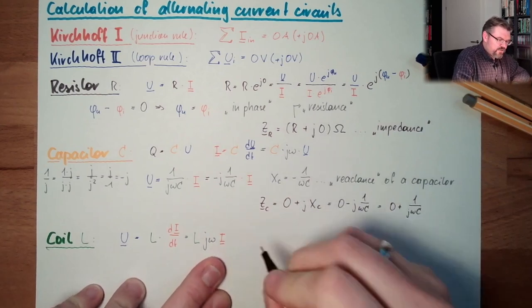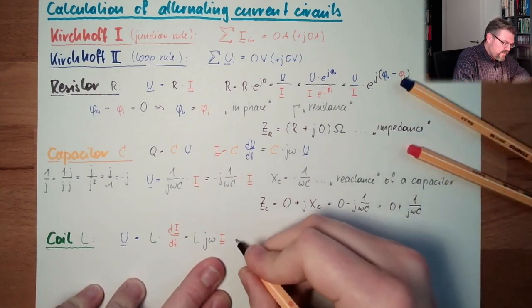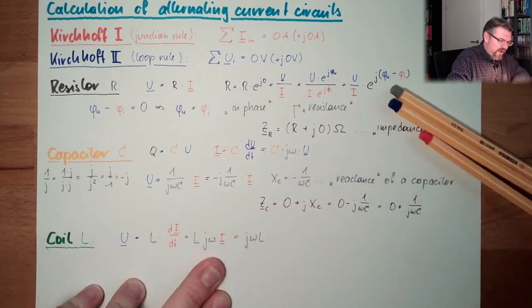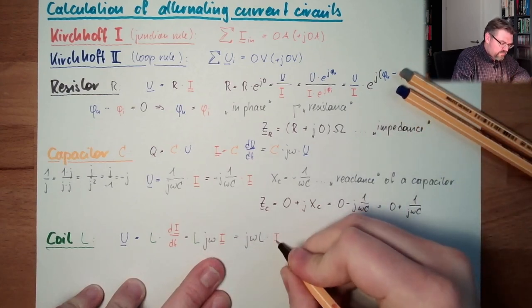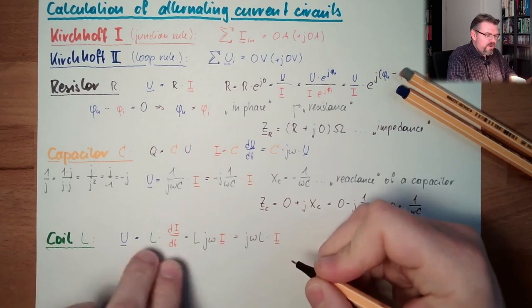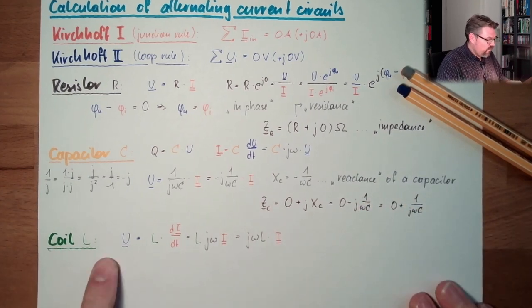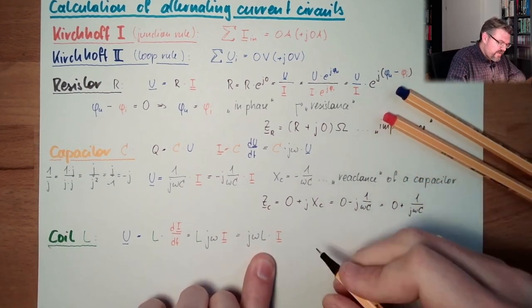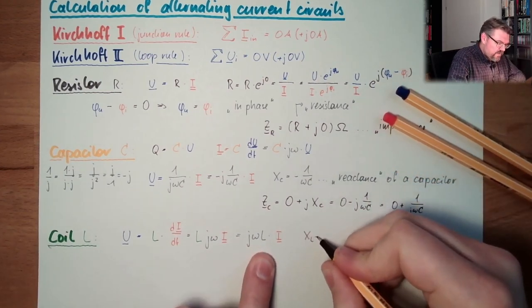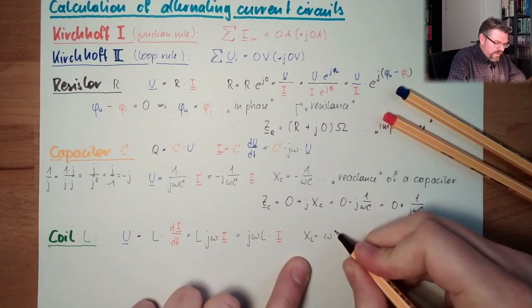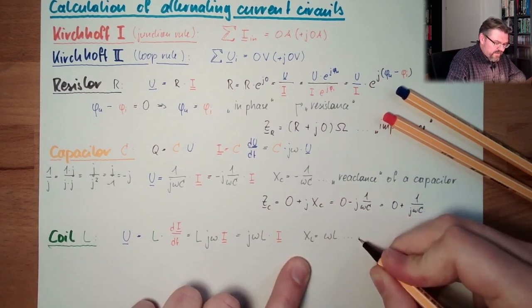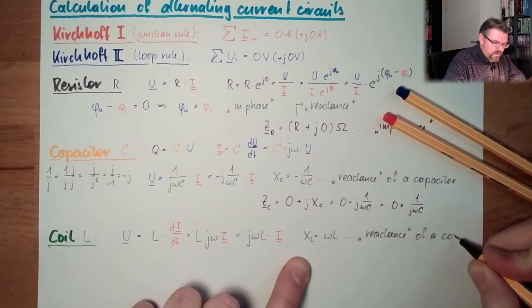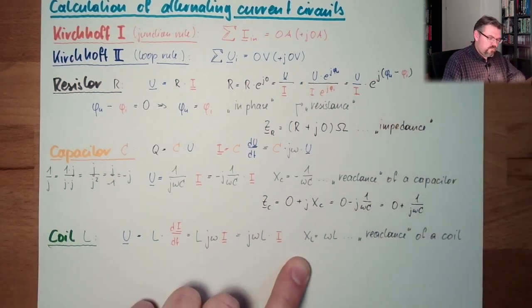And now we already have the derivation. So this actually equals J omega L multiplied by I. Same form. U is something multiplied by current. Voltage is something. And so this here actually is XL. This is omega L. This is the reactance of a coil.